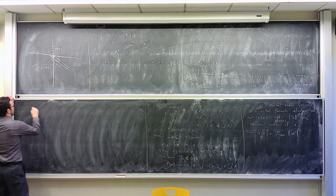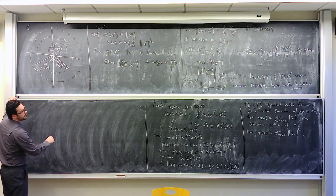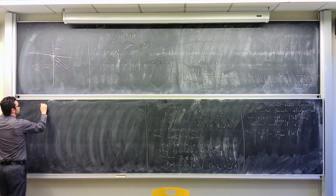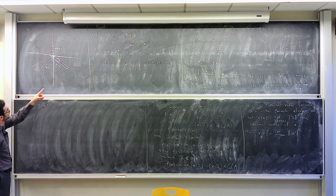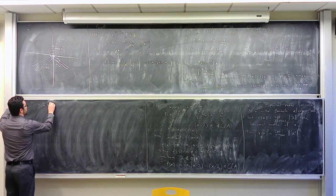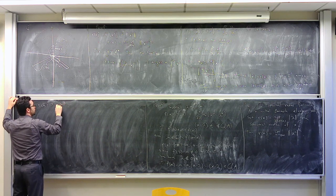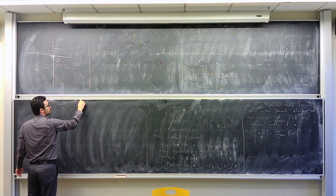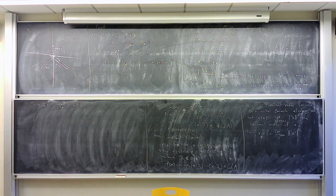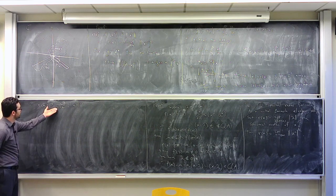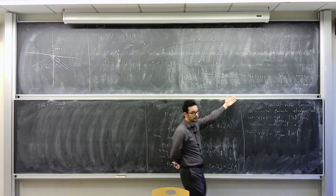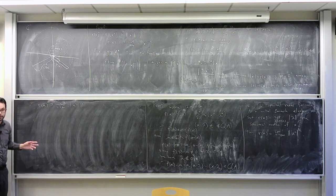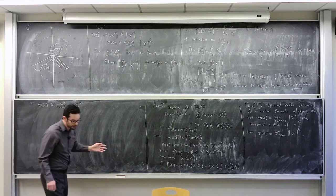This finishes the proof: we already showed the spectral radius of x is less than or equal to the lim-inf, and now we get it's greater than or equal to the lim-sup of the nth root of the norm of x^n, because otherwise we could choose z contradicting the convergence. That's the spectral radius formula.